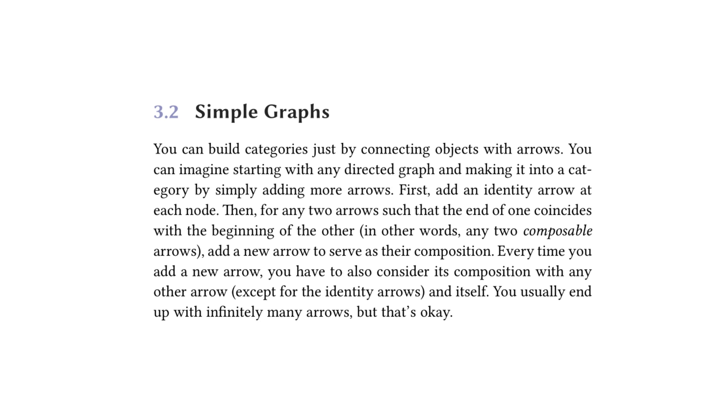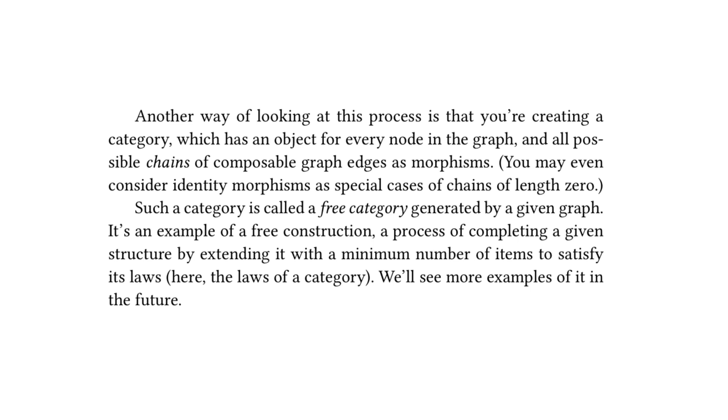Moving on to simple graphs. The text reads, you can build categories just by connecting objects with arrows. You can imagine starting with any directed graph and making it into a category by simply adding more arrows. First, add an identity arrow at each node. Then for any two arrows such that the end of one coincides with the beginning of the other, in other words, any two composable arrows, add a new arrow to serve as their composition. Every time you add a new arrow, you have to also consider its composition with any other arrow, except for the identity arrows and itself. You usually end up with infinitely many arrows, but that's okay.